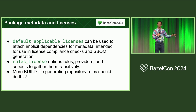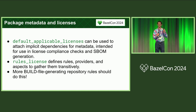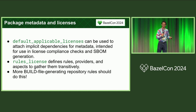We can propagate license metadata and SBOM metadata through default applicable licenses. It would be really nice if more repository fetch rules did this so that we could have a more complete SBOM and didn't have to invoke a bunch of other tools.